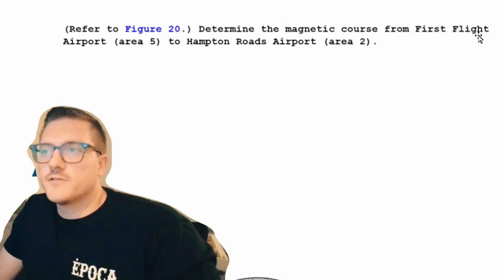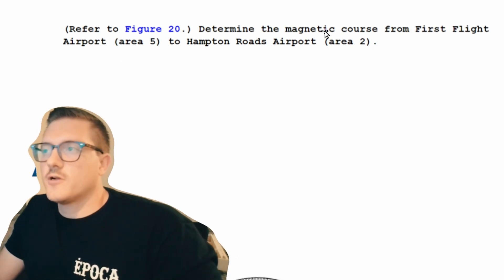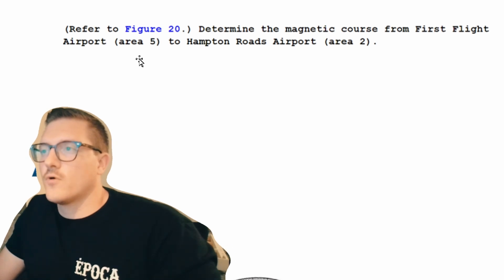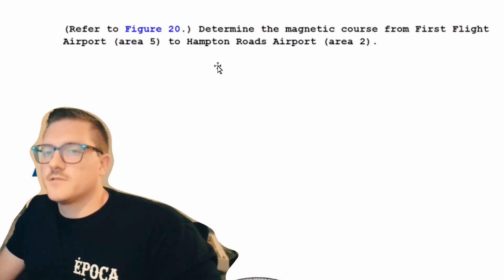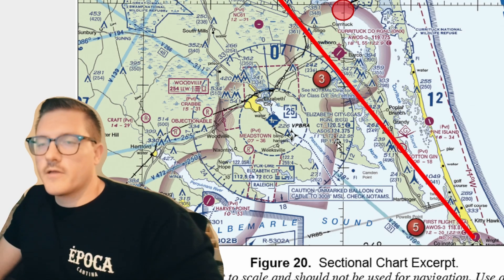This first question we're going to cover today comes from the cross-country planning section. It says: refer to figure 20 and determine the magnetic course from First Flight Airport, Area 5, to Hampton Road Airport, Area 2. So let's go ahead and find those airports on the chart — that's definitely going to be the first thing we need to do.